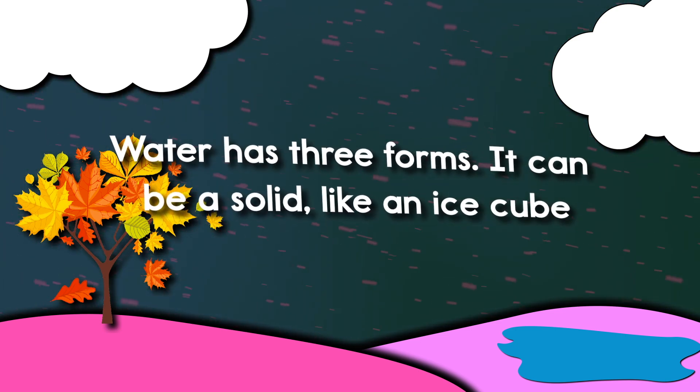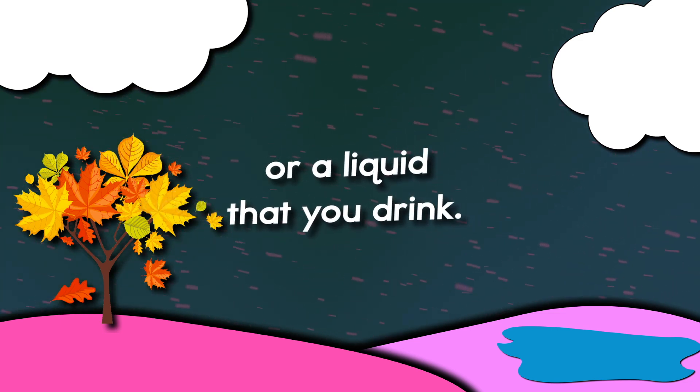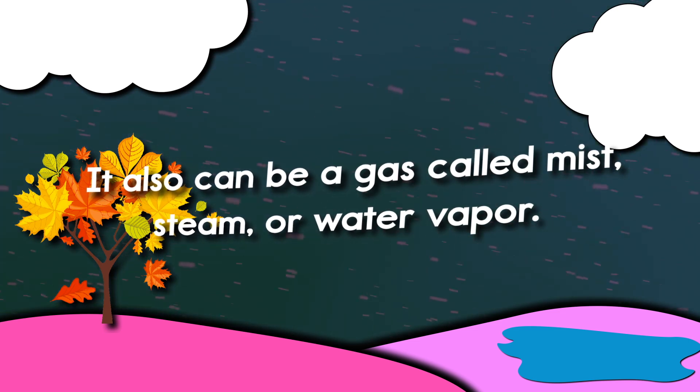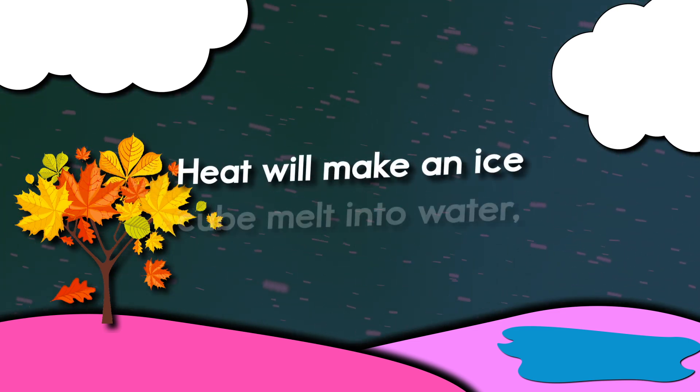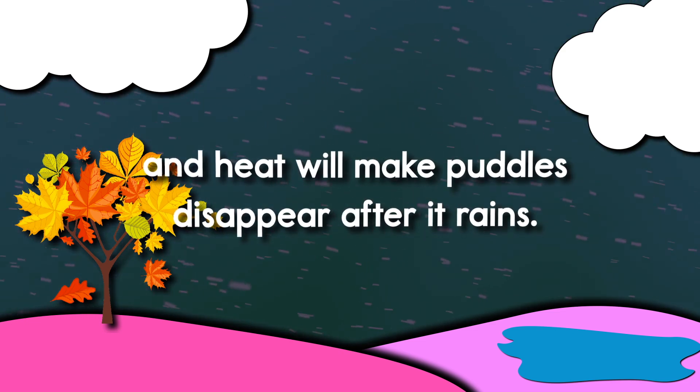Water has three forms. It can be a solid like an ice cube or a liquid that you drink. It also can be a gas called mist, steam, or water vapor. Heat will make an ice cube melt into water and heat will make puddles disappear after it rains.